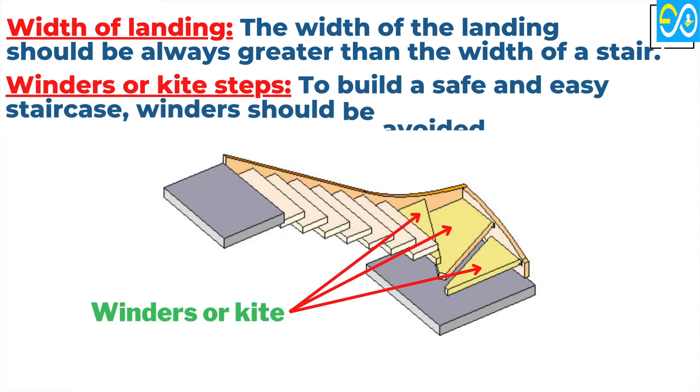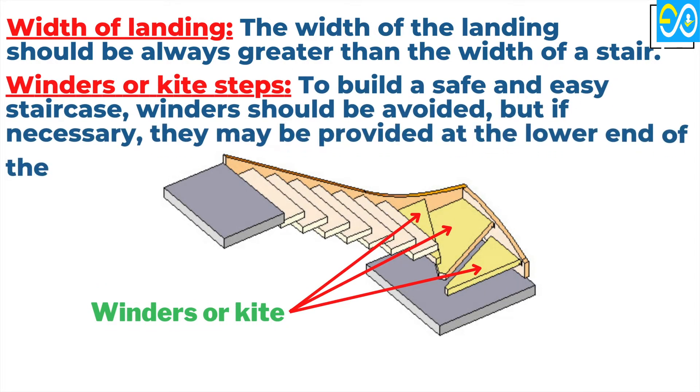Number five, winders or kite steps. To build a safe and easy staircase, winders should be avoided, but if necessary, they may be provided at the lower end of the flight.